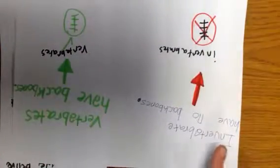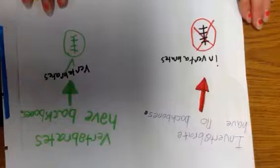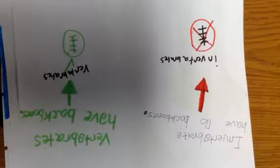Here we have invertebrates and vertebrates. Invertebrates have no backbones, but vertebrates have backbones. So an invertebrate would be like a worm, and a vertebrate would be like a cat.